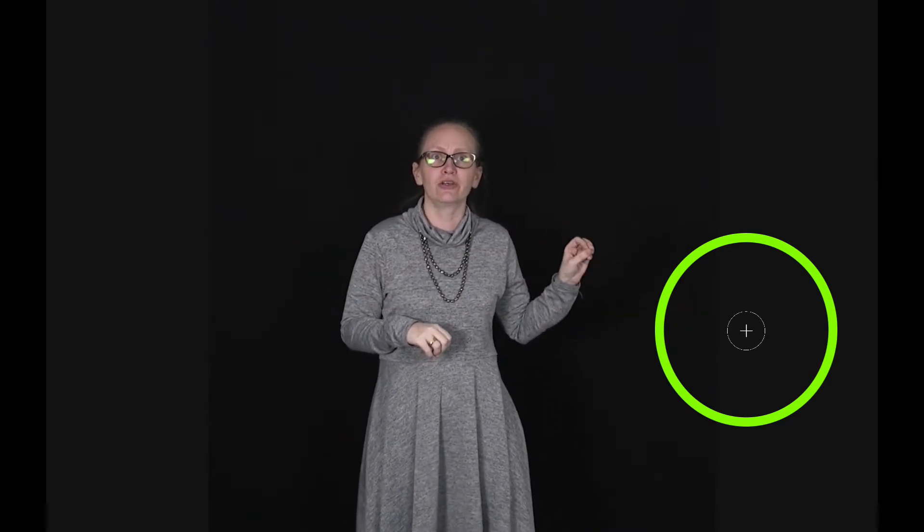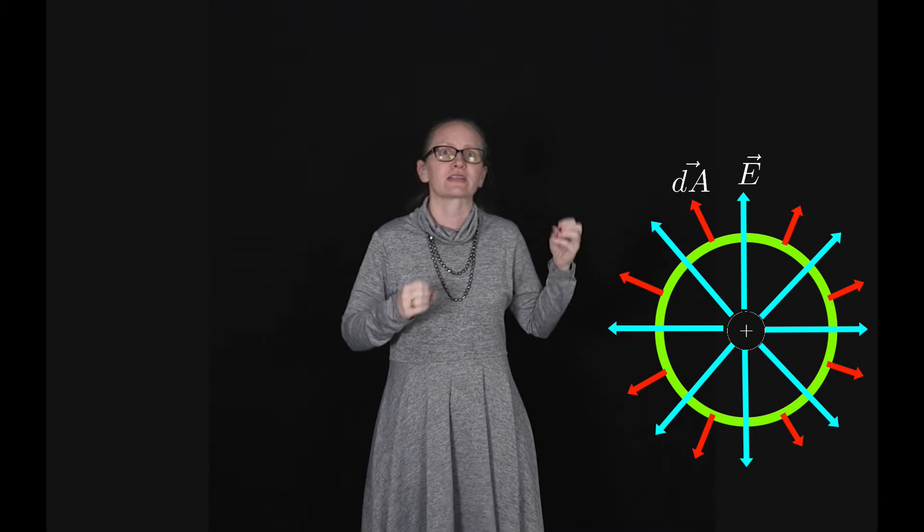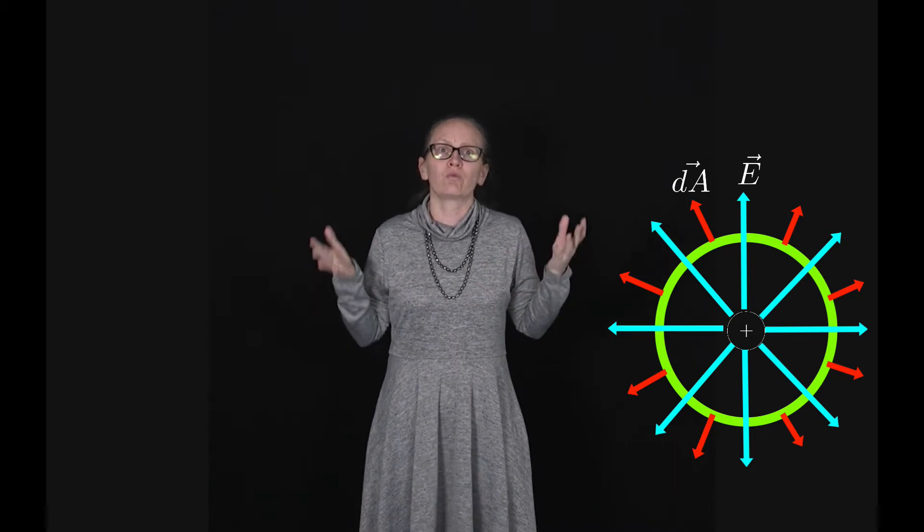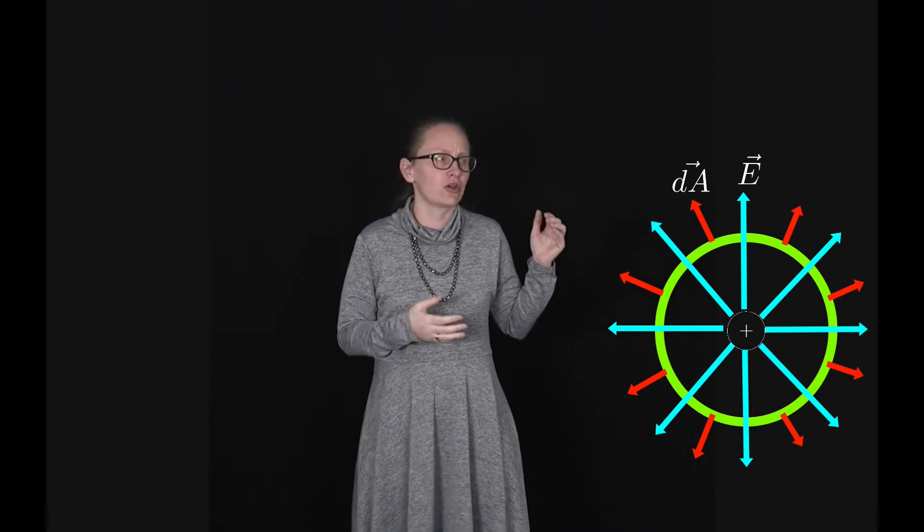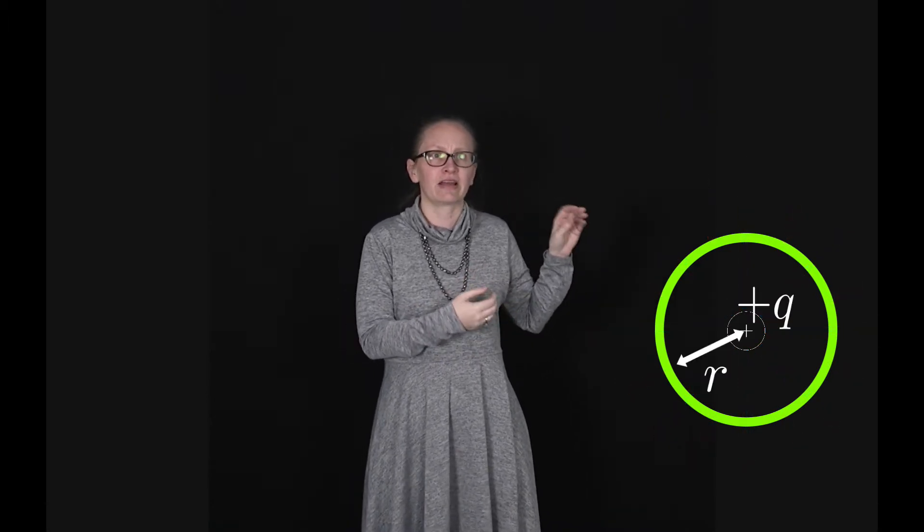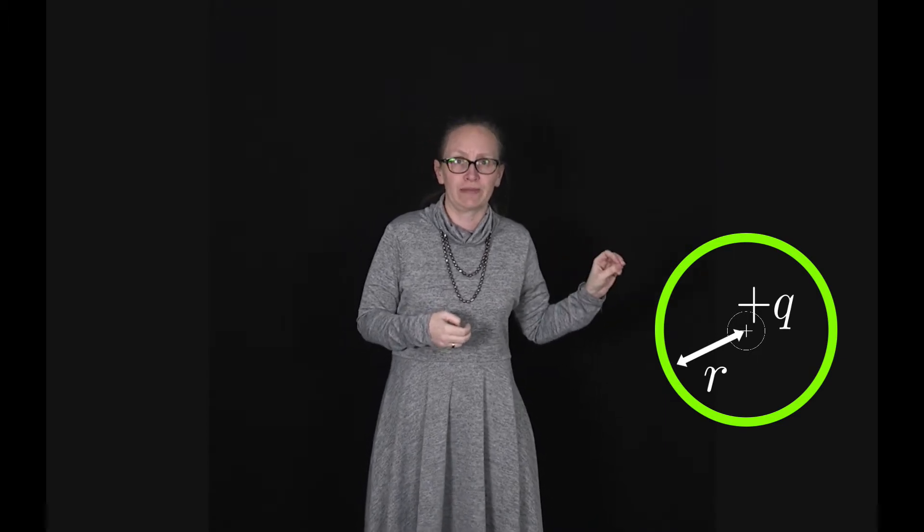If we consider a sphere, shown here in cross section, we could get lines going out of the sphere if we placed a positive charge plus Q inside the sphere. So in this case we now have a flux through that spherical surface. Let's calculate what the flux is equal to in this case. Let's assume that our sphere has a radius little r and we've placed a charge plus Q right in the middle of the sphere.